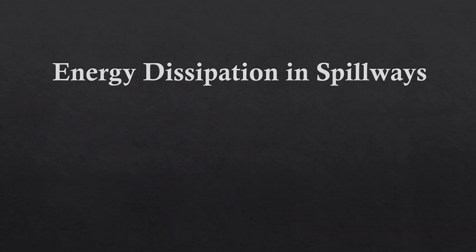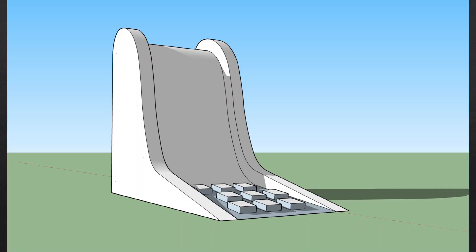Now let's discuss energy dissipation in spillways. In the case of an OG spillway, we can provide roughness elements at the bottom. As water flows over the spillway, it hits one block, takes a different path, swirls, hits another block, and so on. By the time it reaches the downstream riverbed, its velocity is considerably reduced.